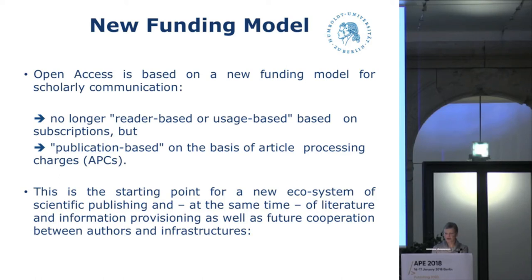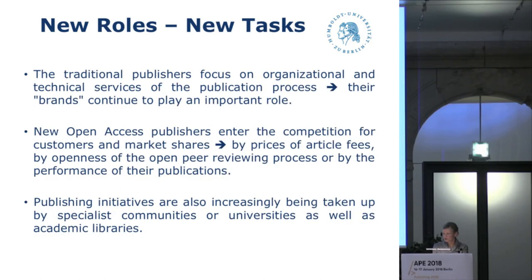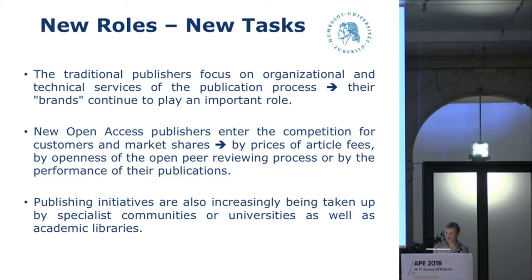The new roles and tasks might look as follows. The traditional publishers focus on organizational and technical services of the publication process such as production of publications, storage of repositories and marketing including indexing. The peer review process could also remain a task of the publishing houses, but it could however also be transferred to a scientific community or universities. The brands of the traditional publishing houses will in any case continue to play an important role. New open access publishers enter the competition for customers and market shares, trying to gain influence by price of article fees, by openness for the open peer reviewing process or by the performance of the publications.